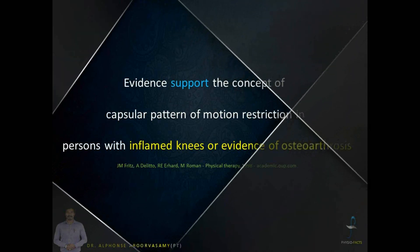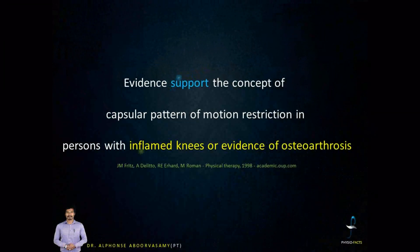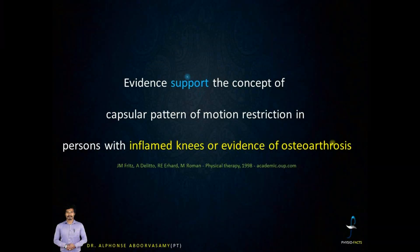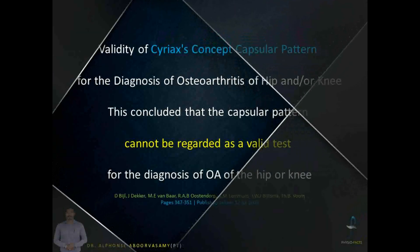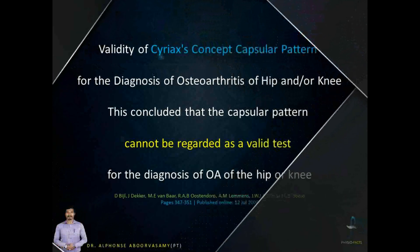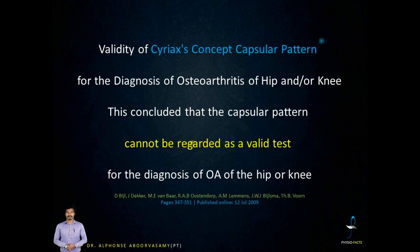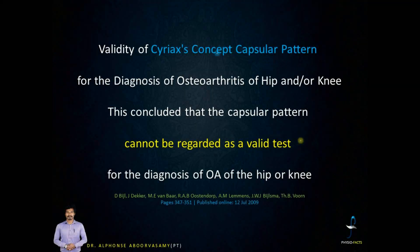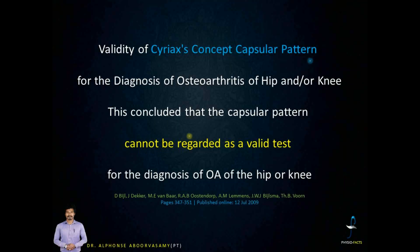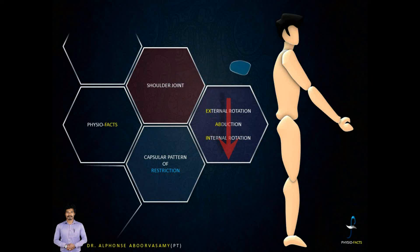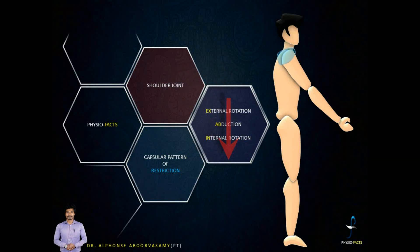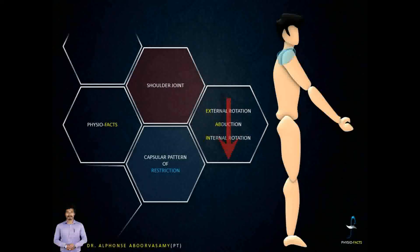There are evidences that support the presence of capsular pattern of restriction as claimed by Cyriax. There are also studies that question or doubt the validity of the concept proposed by Cyriax. Whatever it is, it is essential to know about the capsular pattern of each joint.